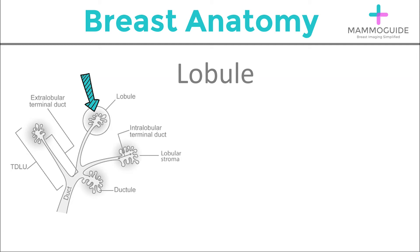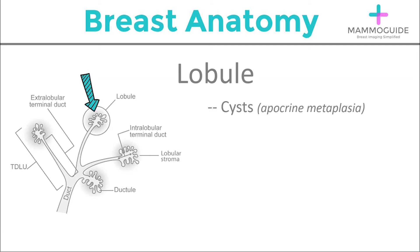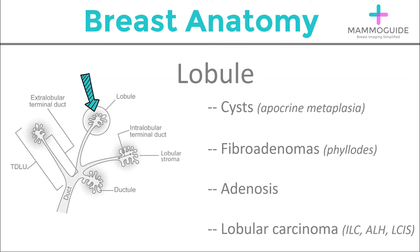The lobules are at the end of the terminal duct — this is where milk is made. Cysts very frequently form within the lobule. Fibroadenomas occur within the lobule. Adenosis can occur in the lobule. And lastly, lobular carcinoma, which is a spectrum ranging from atypical lobular hyperplasia to lobular carcinoma in situ and invasive lobular carcinoma.